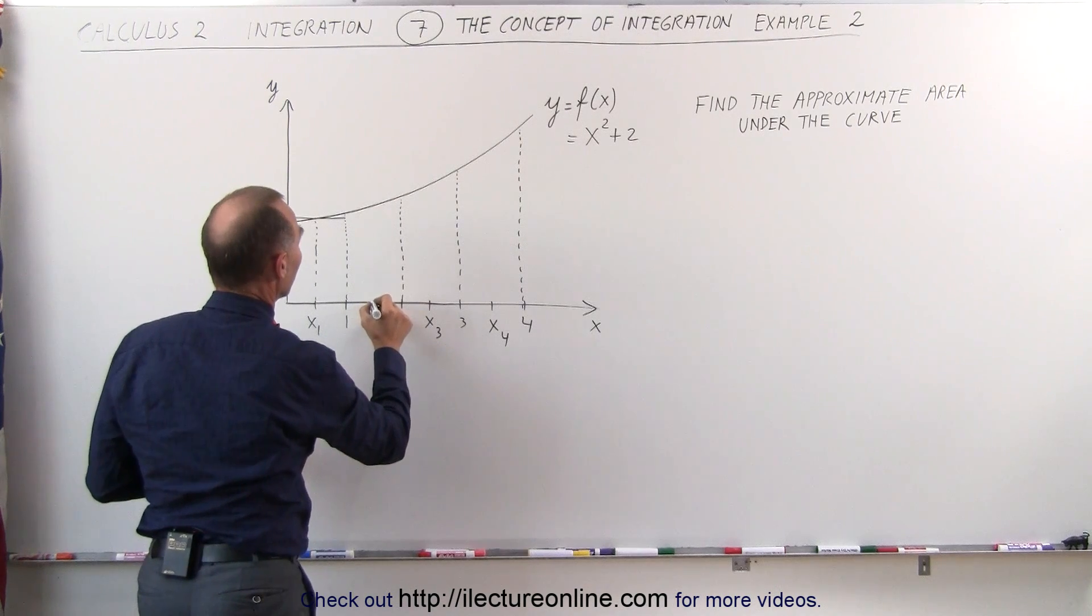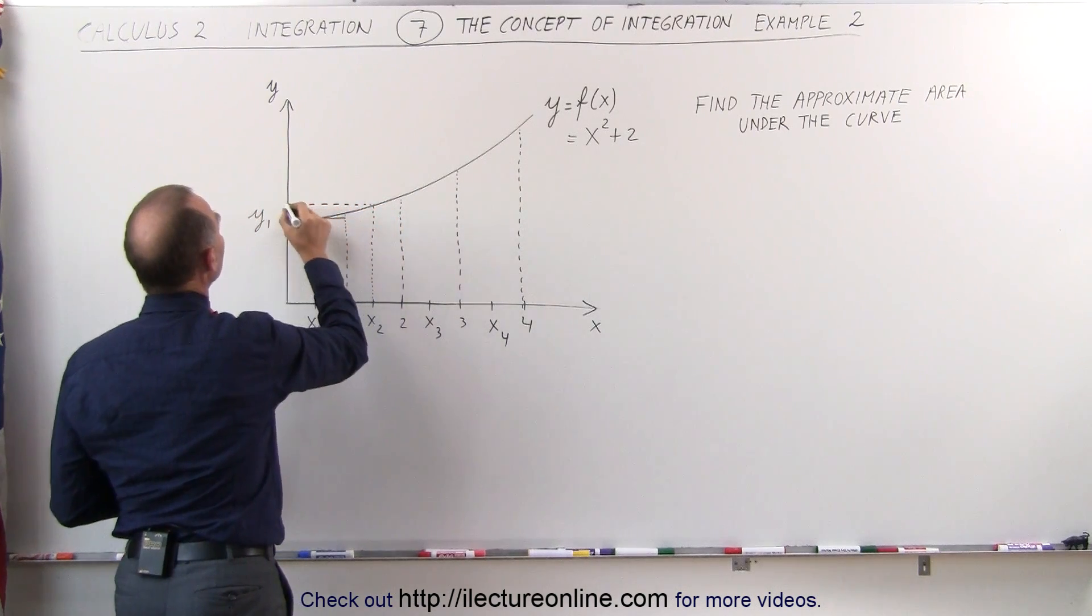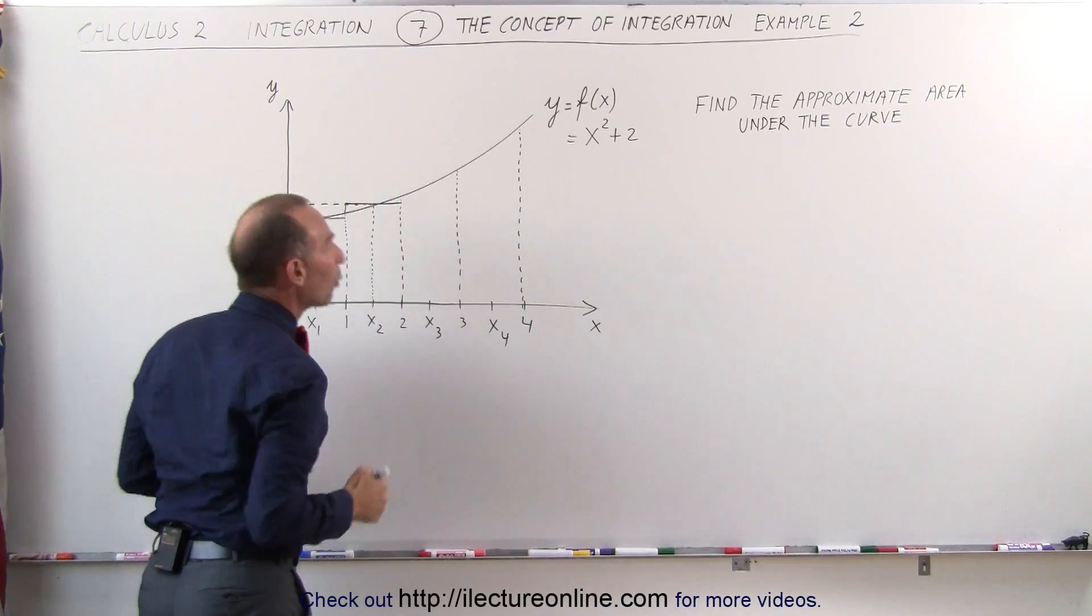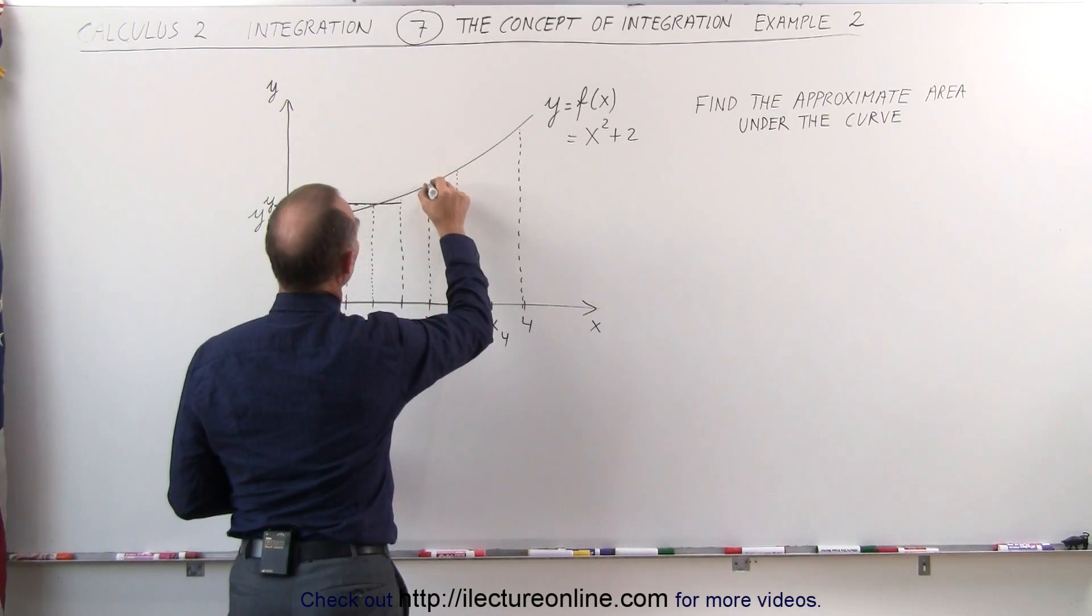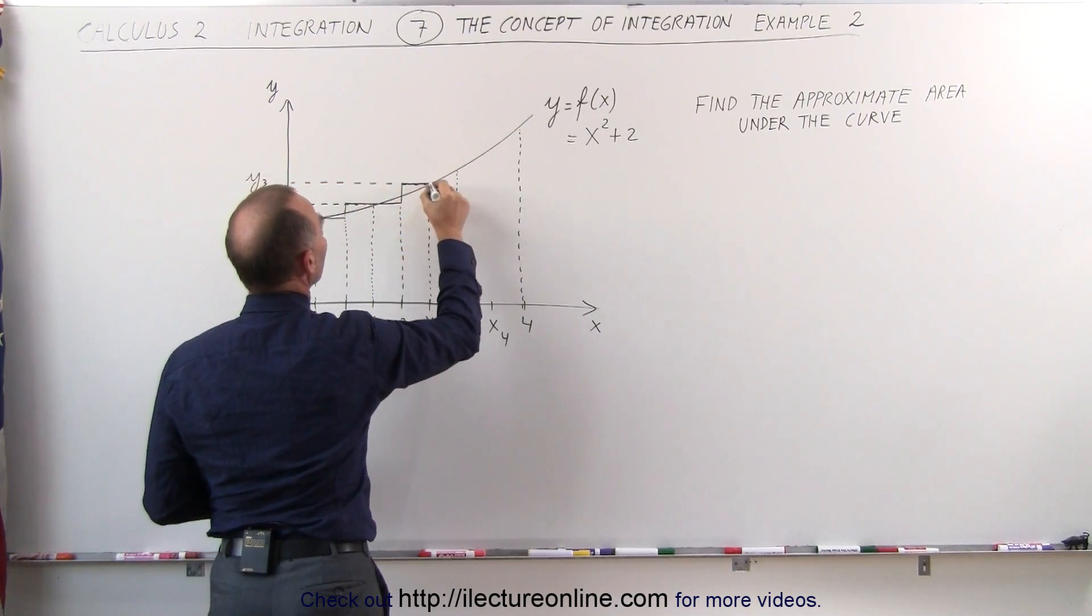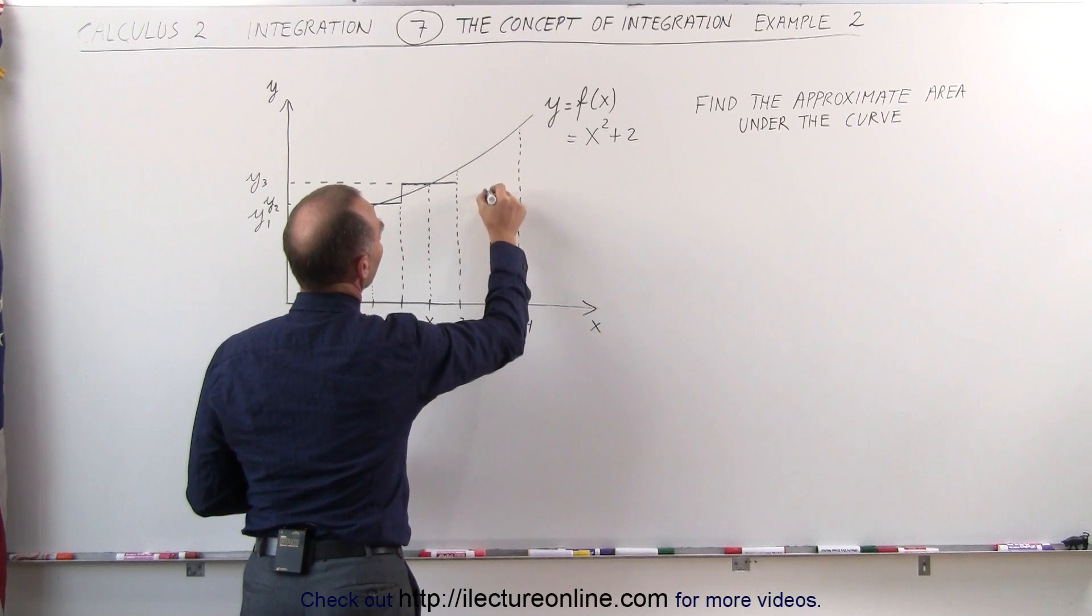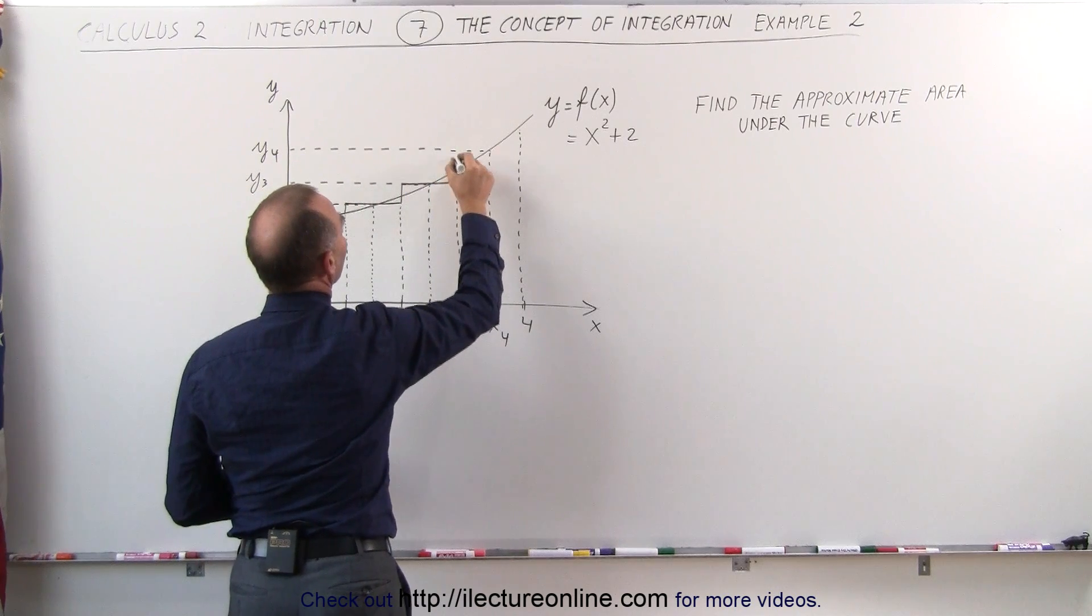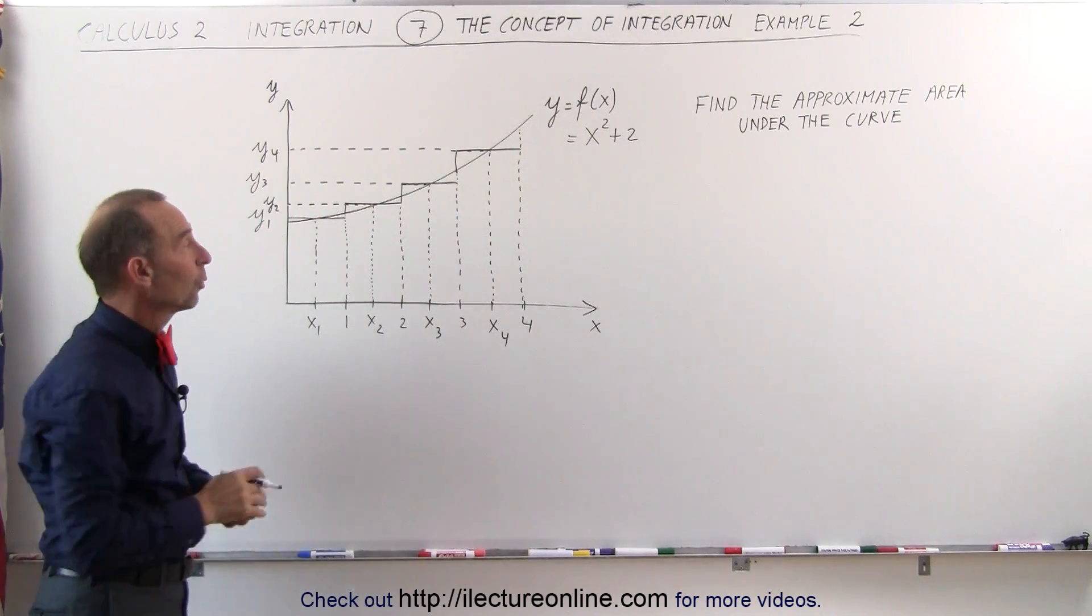Again, for the second rectangle, we find the height by going down the middle where we hit the curve. This will be the y2, that will be the height of the second rectangle. Notice that we'll have some excess area on the left, but not quite enough area on the right side of the rectangle. We'll do that again with the third rectangle. This will be the height of the third rectangle, y sub 3. Again, when we draw the rectangle, notice that we have some excess over here, but some lacking over there. And finally, find the height of the fourth rectangle. We come up here, this will be the height of the fourth rectangle, y sub 4. When we draw the rectangle like this, notice we have some excess here, but a little bit lacking there, and they should almost cancel one another out.